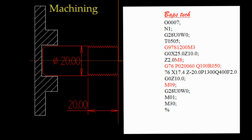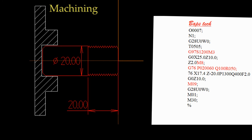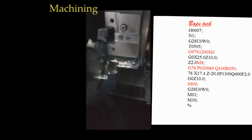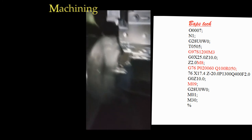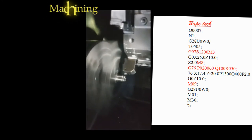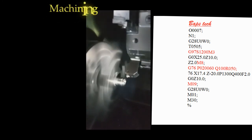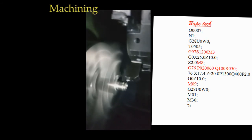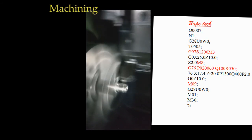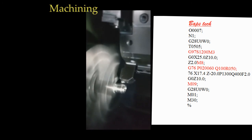This is the multistart threading cycle — 2-start, 3-start, 4-start. Using G76 and G32, you can program how the multistart threading cycle moves.